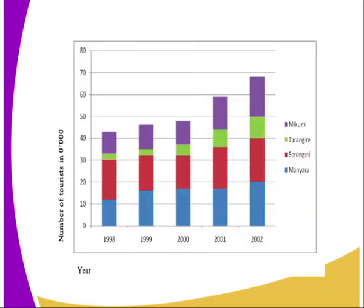This is the way you are supposed to draw it. Remember, the next step is drawing the X and Y axes. After drawing the axes, the next step is getting the scale. We have the Y axis and the X axis inside the box, and the spaces decided between each bar. For 1998, you can see the bar cumulatively — the total is 43, but they are subdivided. Mikumi is shown in purple, Terengate in green, Serigiti in red, and Maniera in brown. That is the key.